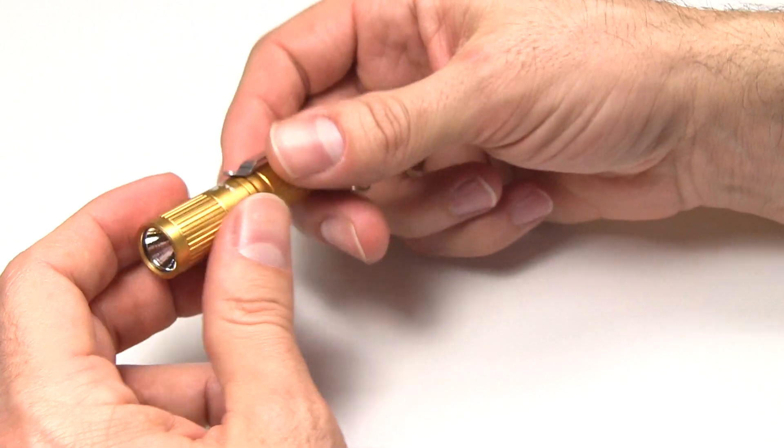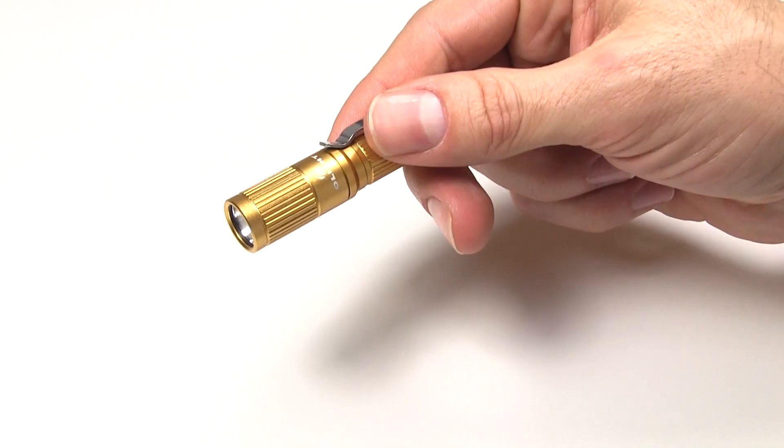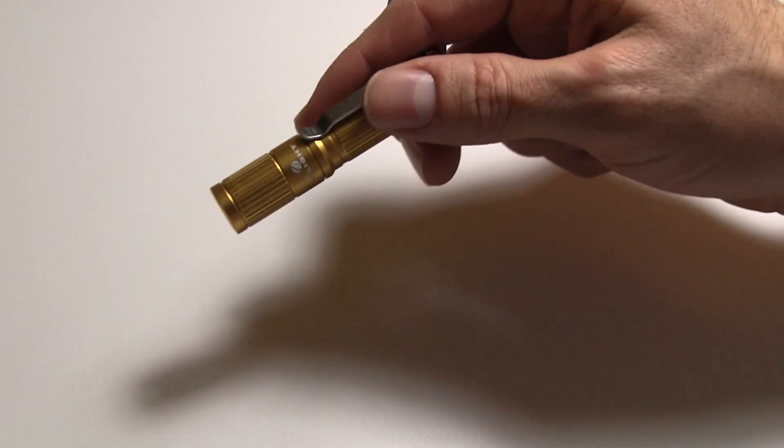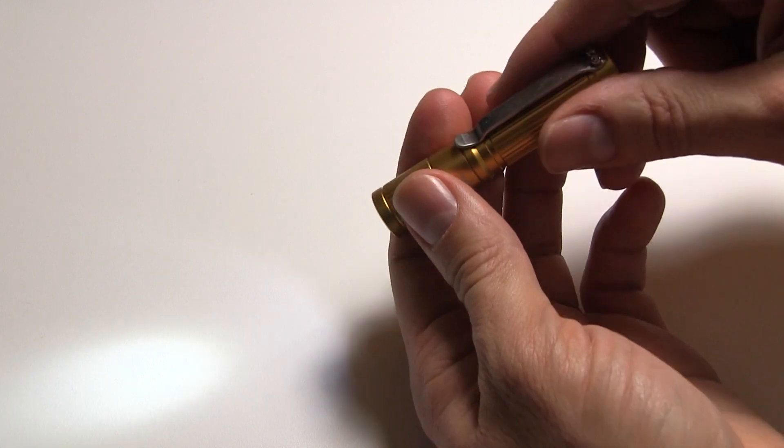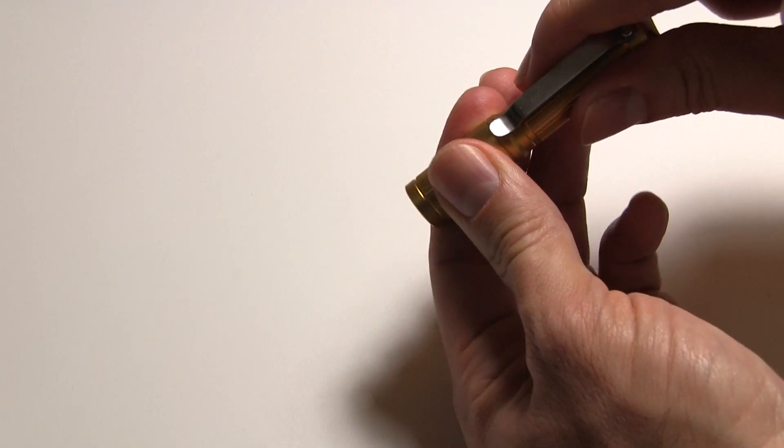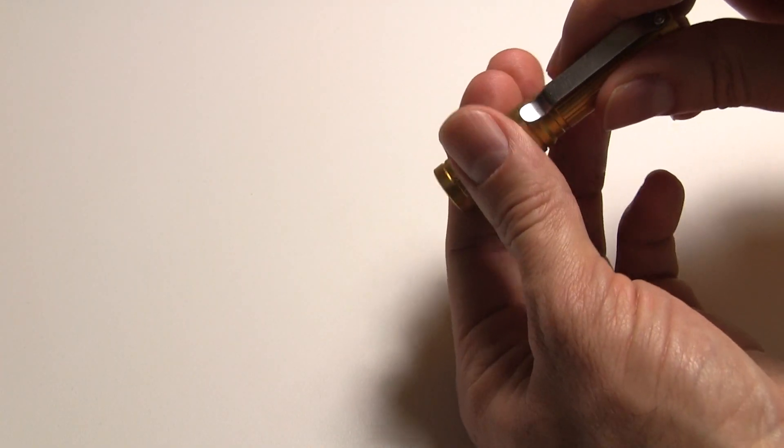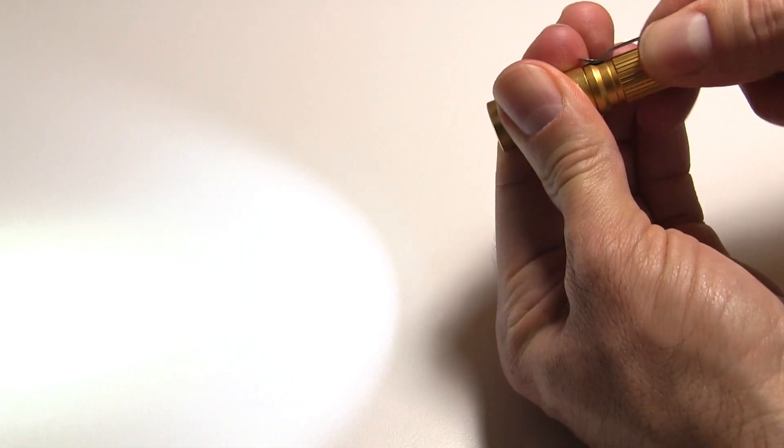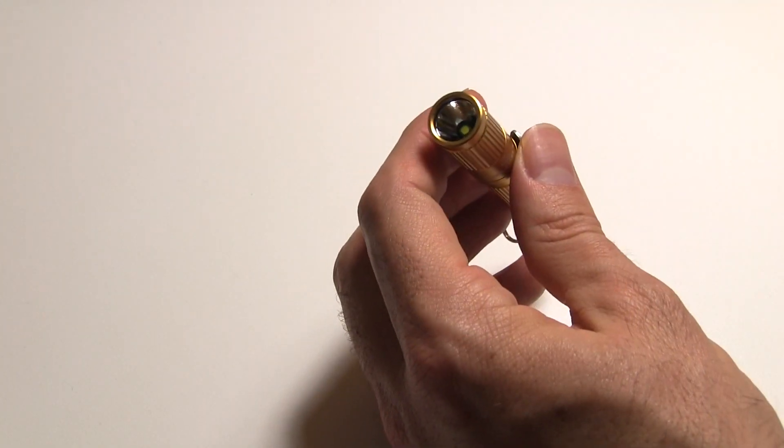So the function of this light, the user interface, you get to just by twisting the head. Let me turn the lights off here and we'll take a look at it. So this will do 2.5 lumens for 20 hours, 20 lumens for an hour and a half, or 70 lumens for 42 minutes. And you get to them just by loosening and tightening the head. Low, medium, high, low, medium, high. So very easy to control, very nice design.